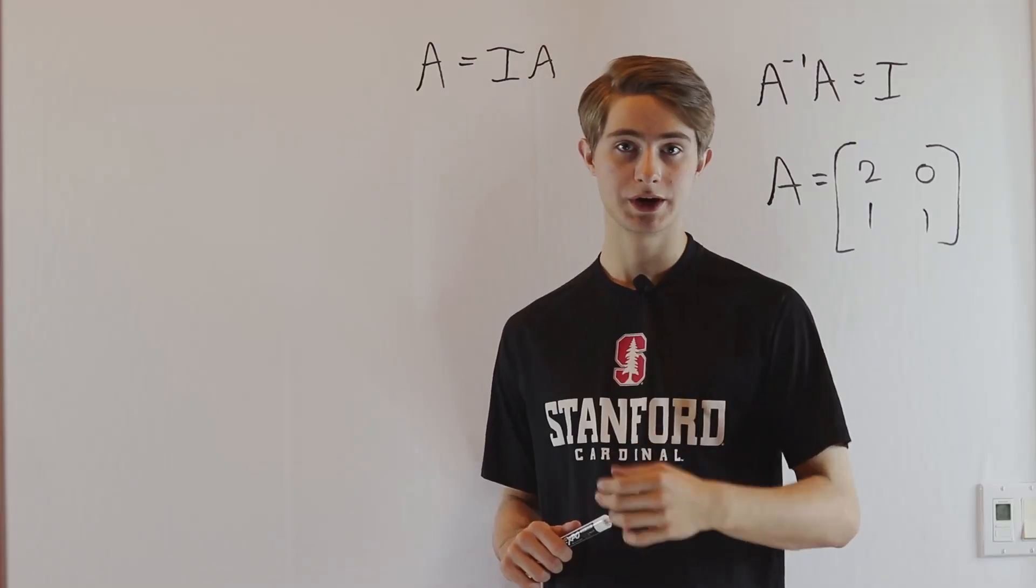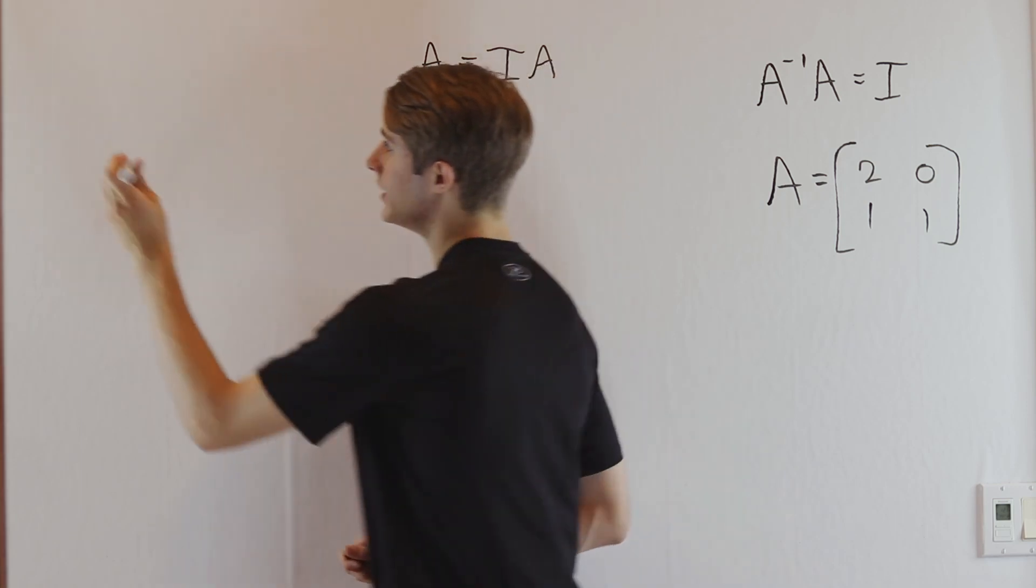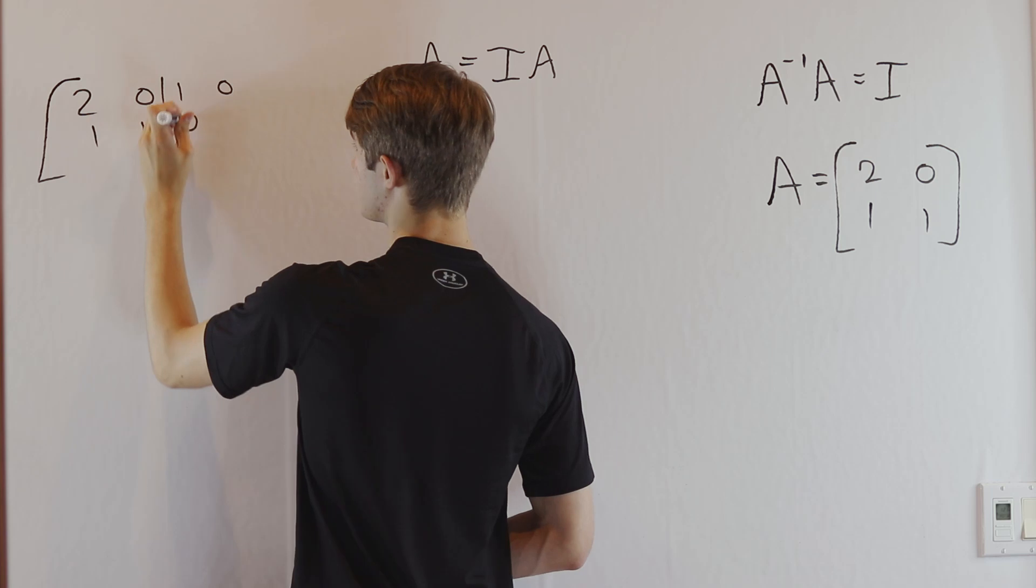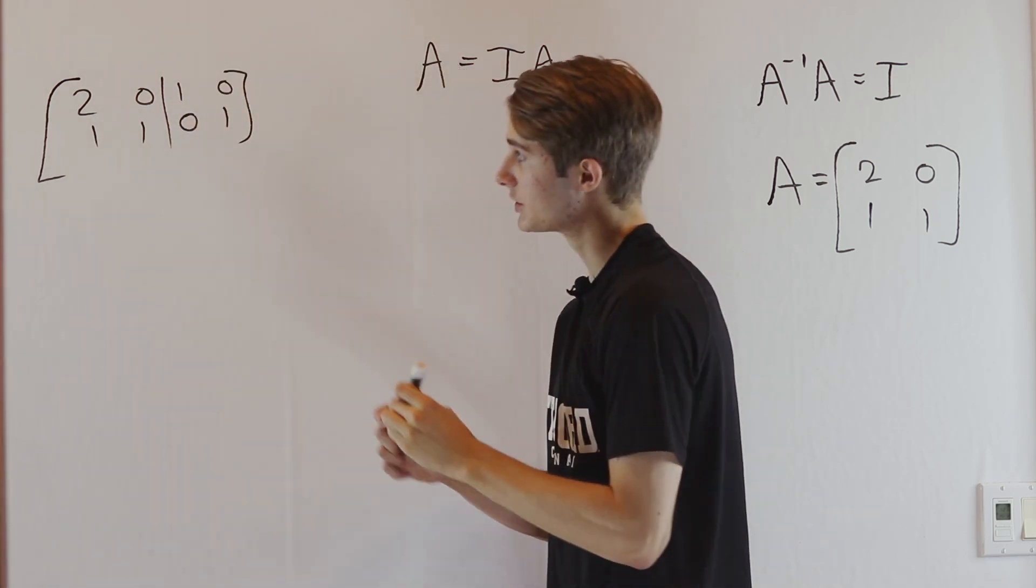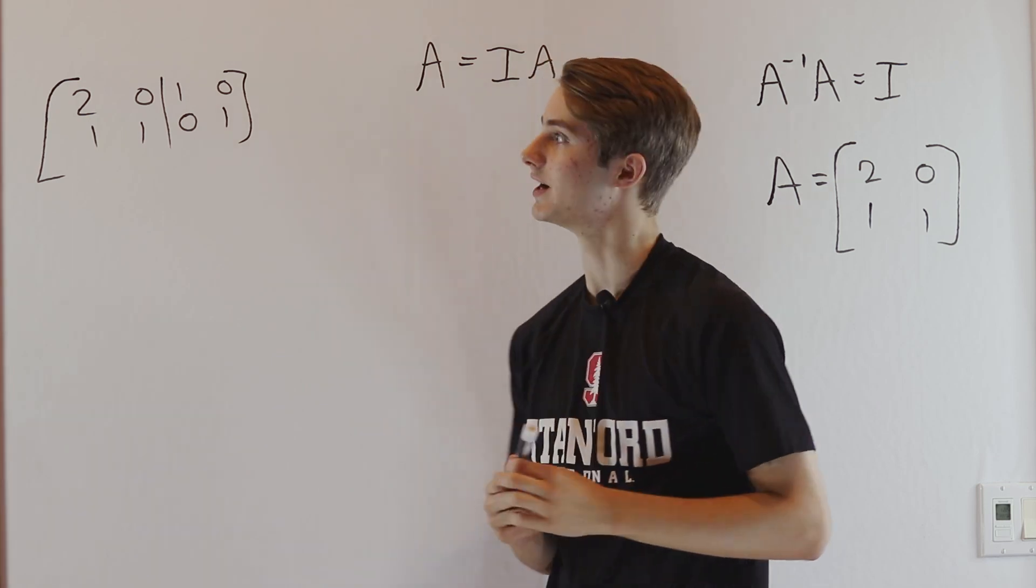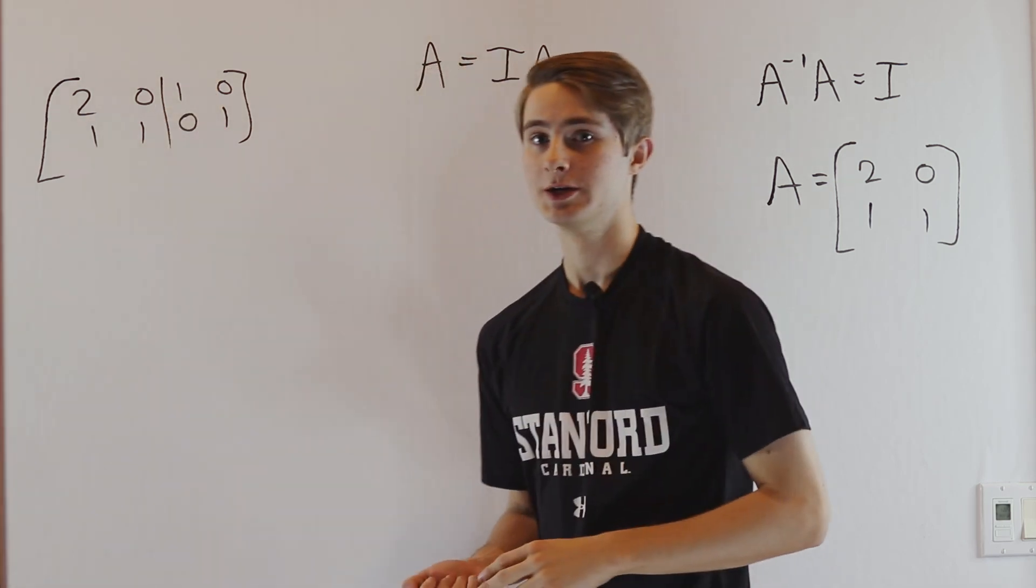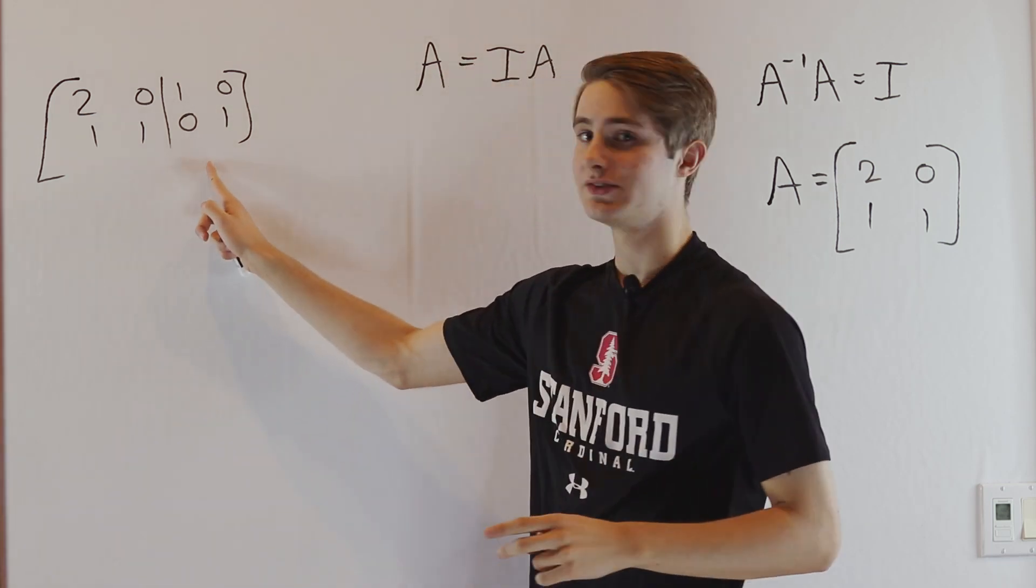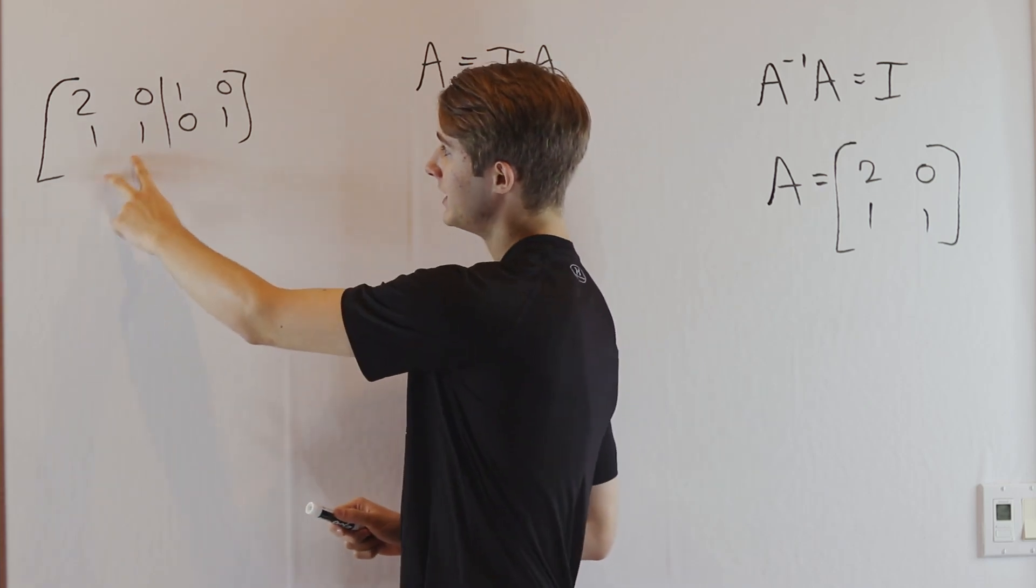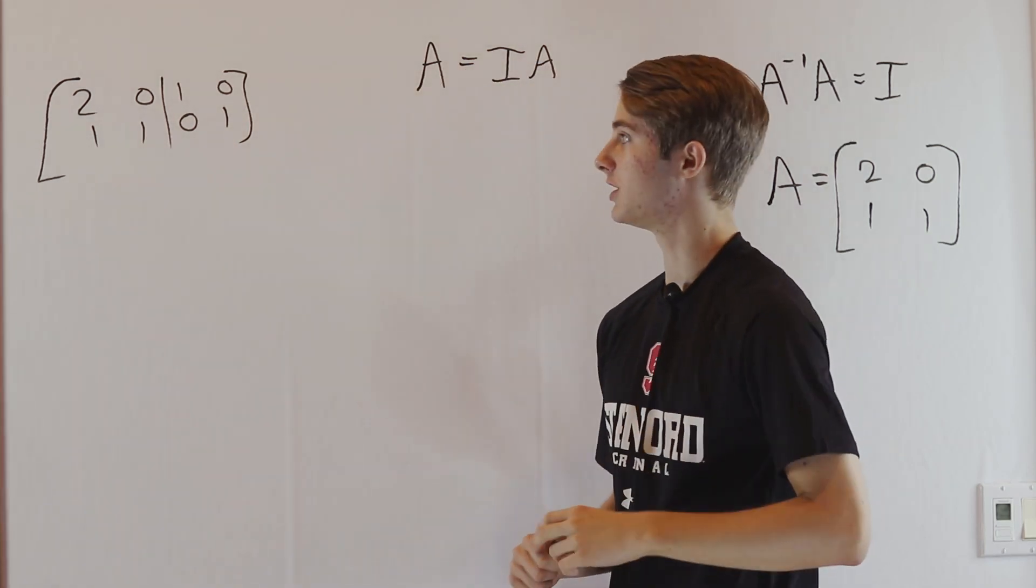We're going to construct something called a super-augmented matrix. You've probably seen augmented matrices in Gauss-Jordan elimination, where we put the coefficient matrix on one side and a vector of constants on the right. In this case, we're going to augment not by a single vector, but by an entire 2×2 matrix—specifically the identity. We've taken our original matrix and put the identity matrix on the other side to create a super-augmented matrix.